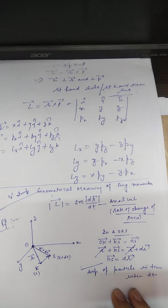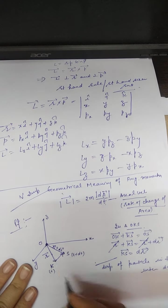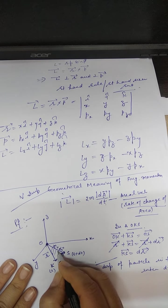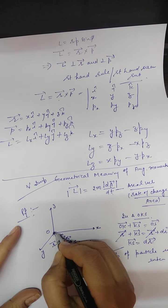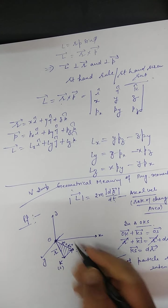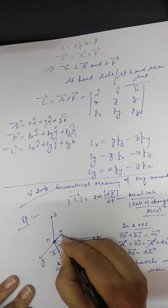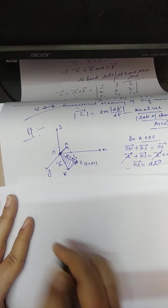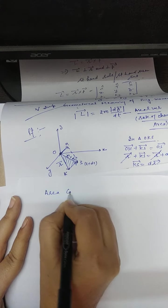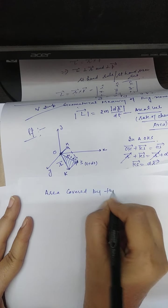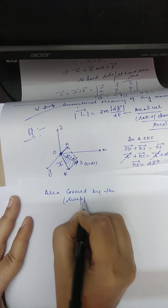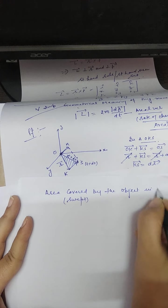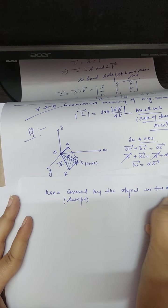Now we calculate the area covered (area swept) in time dt. We complete the parallelogram by drawing a vector parallel to dr from O, reaching point M. The area covered by the object in time interval dt is the area of triangle OKS.